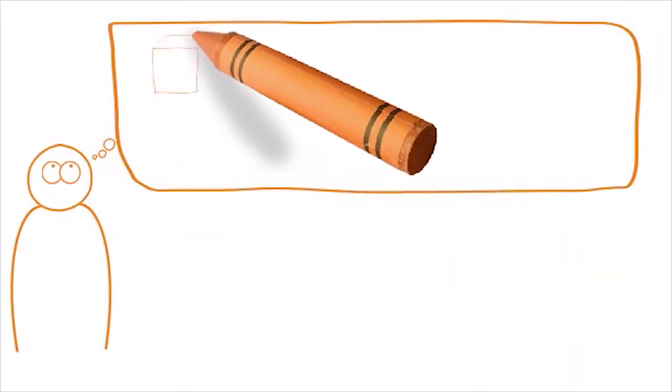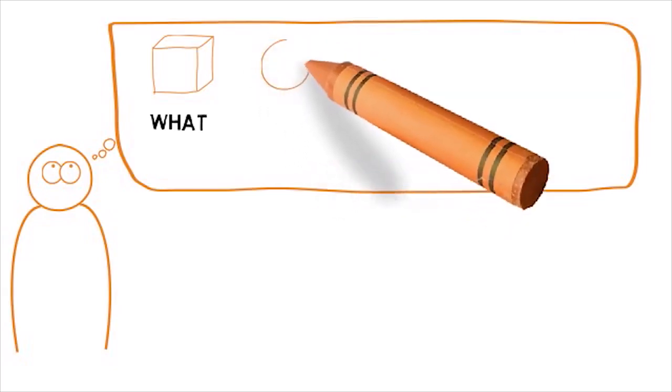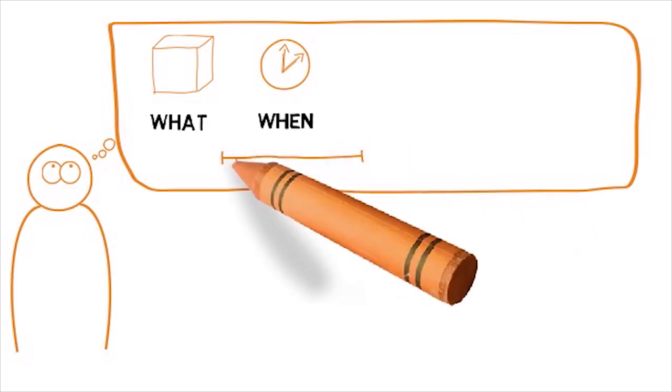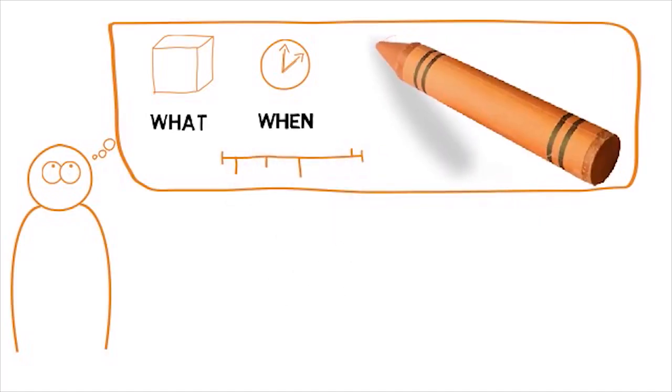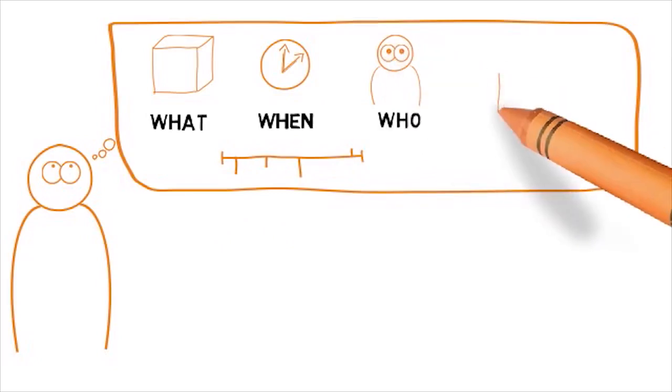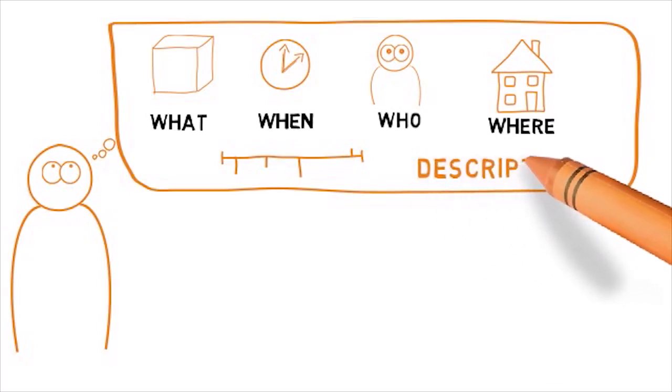When most people reflect they write about what happened, about when it happened, often in the form of a timeline. I did this, then I did that. They write about who was involved and perhaps where it happened. These are useful things but they are basically descriptive and writing about them does not actually contribute to useful reflection.